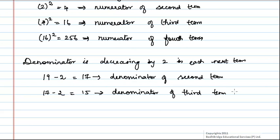Hence, the fourth term will be equal to 15 minus 2 and it is equal to 13, which is the denominator of fourth term.